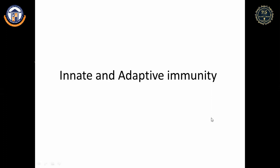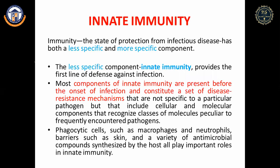In innate immunity, it is a less specific immunity. In adaptive immunity, if a foreign organism enters the body, more specific antibodies or T cells respond against it. The components of innate immunity are present before the onset of infection, ready to attack foreign agents that enter the body.